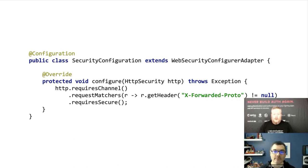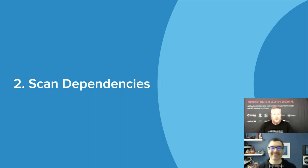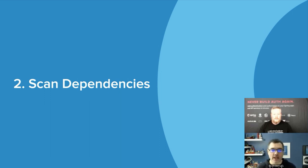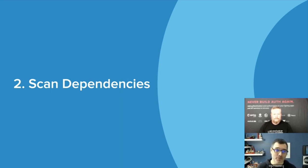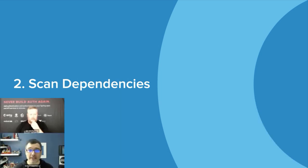Now I'll turn it over to Brian for the next excellent way to secure your Spring Boot app. Next up, you need to make sure you're scanning your dependencies for vulnerabilities. All of our applications contain dependencies and we need to make sure they're safe. Historically this has been difficult — we used to check JAR files into source control with no version information, making it basically impossible to figure out which versions you had running.